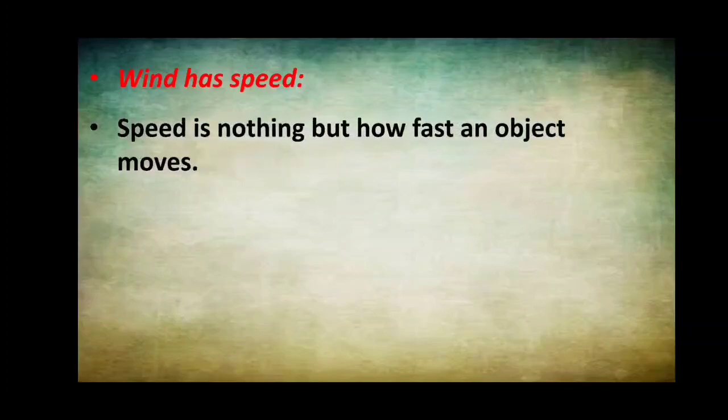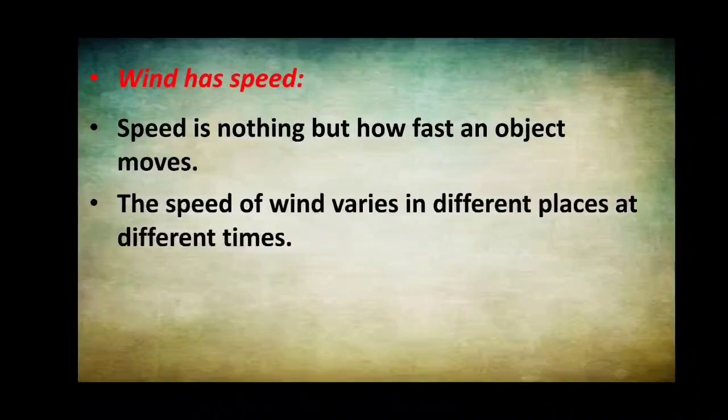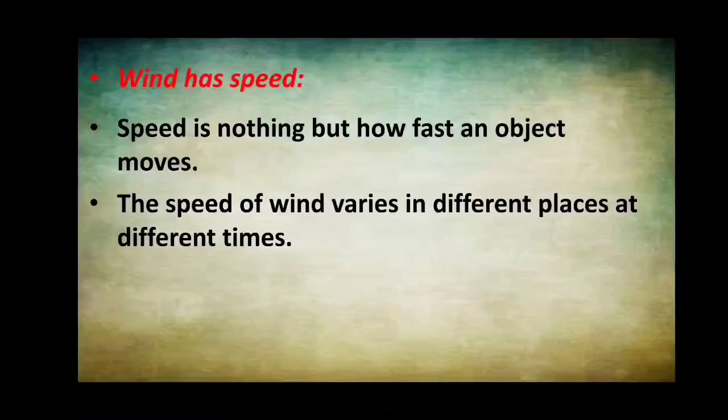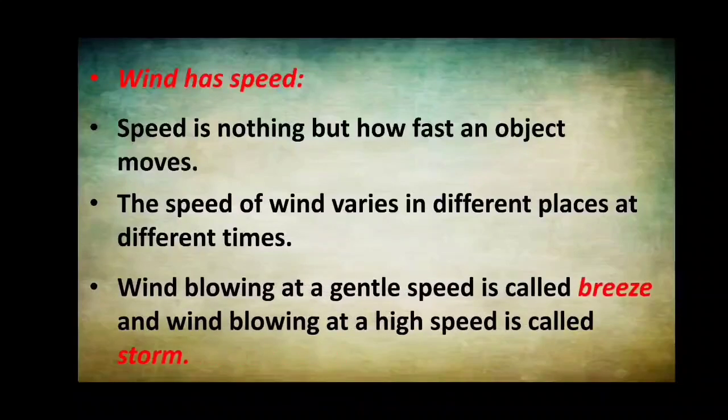The next property is wind has speed. Speed is nothing but how fast an object moves. The speed of wind varies in different places at different times. Wind blowing at a gentle speed is called breeze and wind blowing at a high speed is called storm.